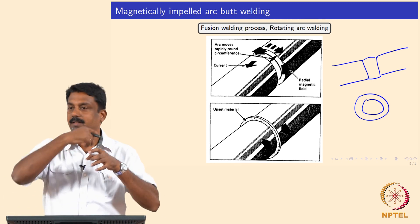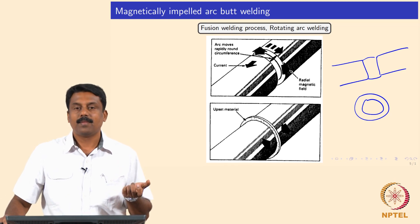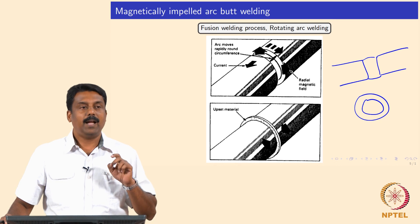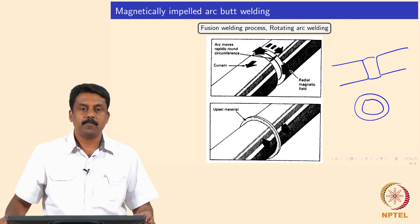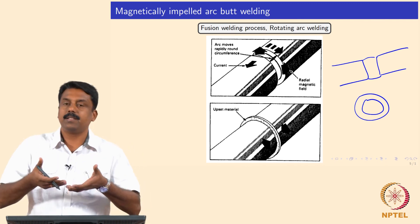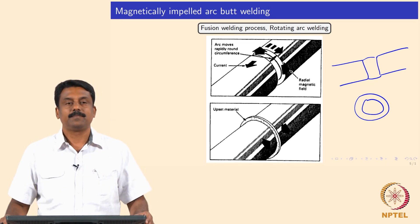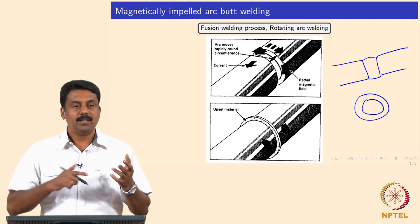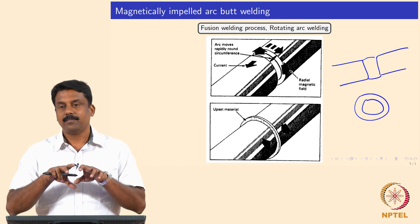Otherwise you will never strike an arc through the cross-section, because electrons will pass where they find the least resistance - only at the surface, inner and outer thicknesses. By attaching a very strong magnet surrounding the pipe, we can impel the arc throughout the cross-section and through the thickness, so you can melt much more uniformly. These magnets impel the arc along the circumference as well as along the thickness so that we can melt uniformly, and once you melt you will do an upsetting.